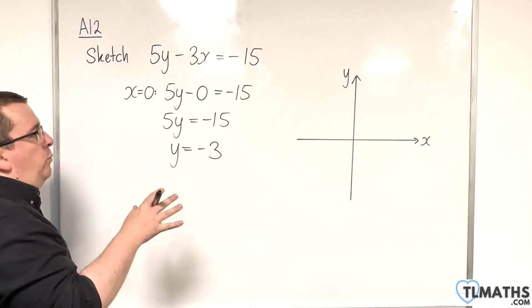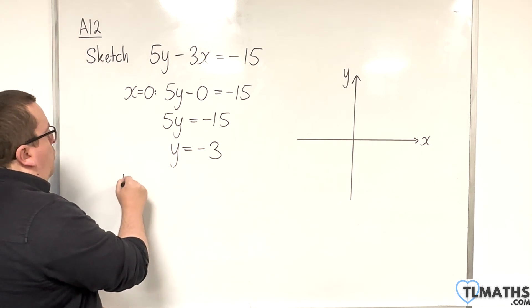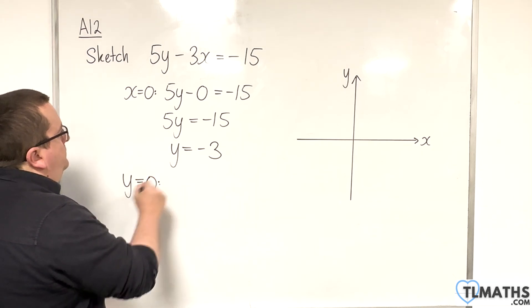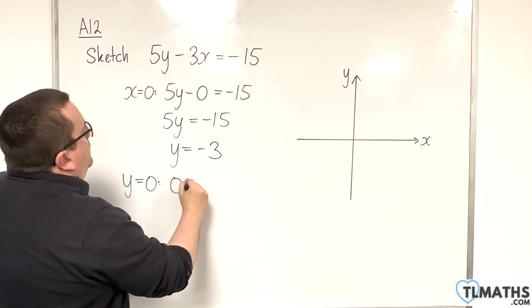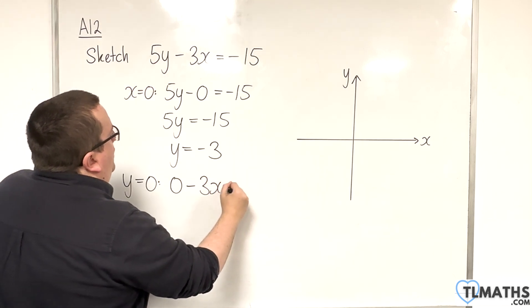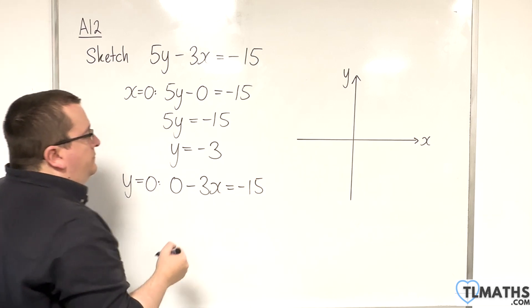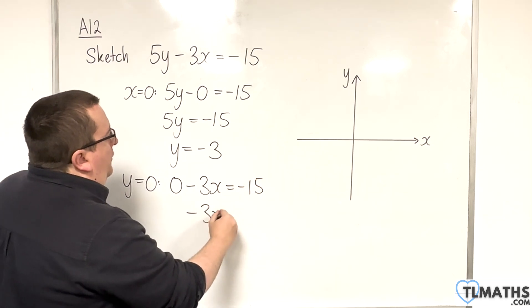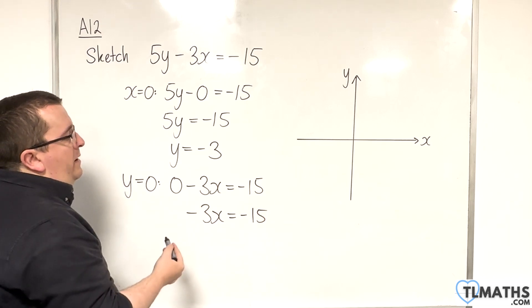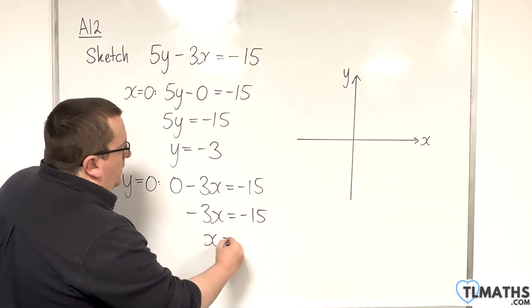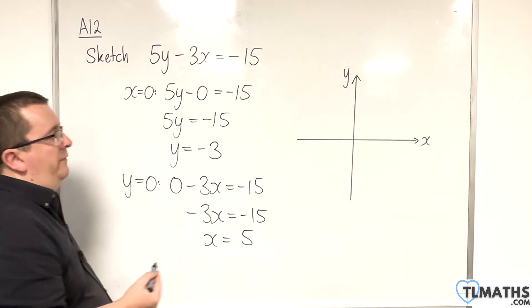So, now let's work out where it crosses the x-axis by putting in y is 0. So, when y is 0, we're going to have 5 lots of 0 take away 3x is equal to negative 15. So, minus 3x is negative 15. Divide both sides by minus 3, and we'll get x is positive 5.